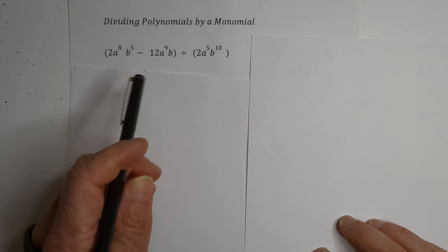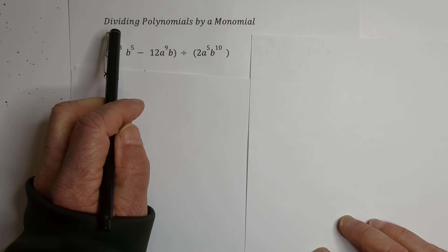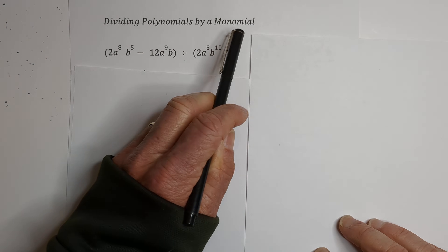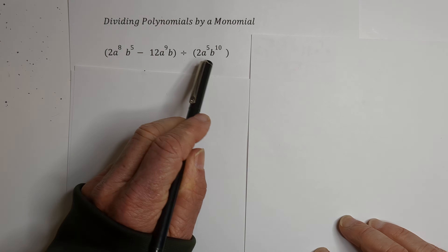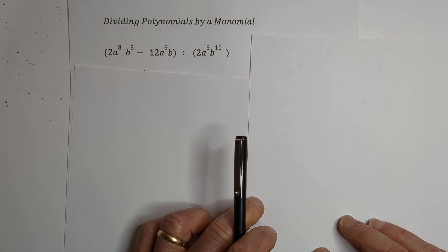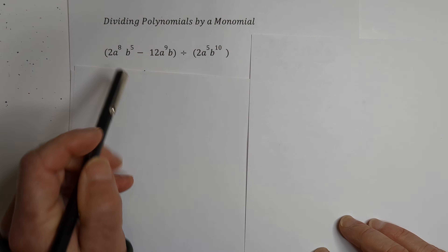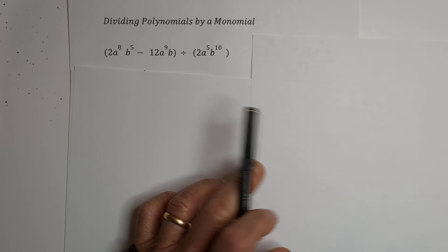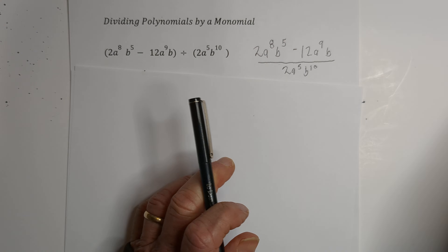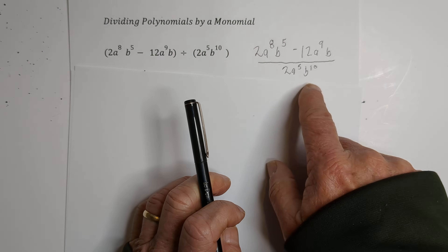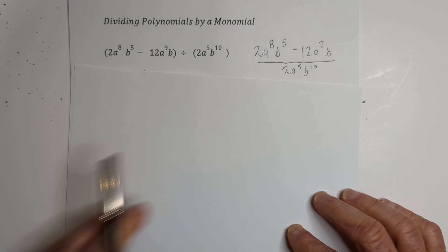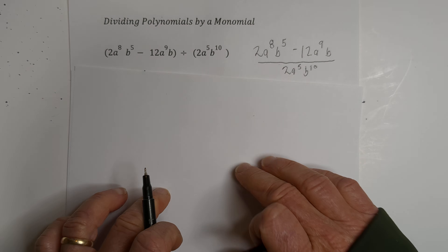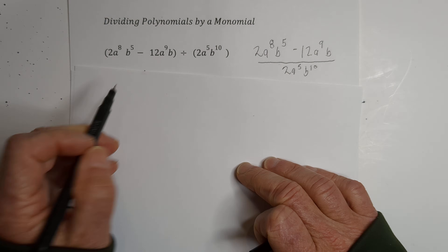Welcome to Moomoo Math and Science. In this video, let's work on dividing a polynomial by a monomial. We have a binomial divided by a monomial. You may see this problem written sometimes like this in just a fraction form — it's basically the same thing. So let's get started.